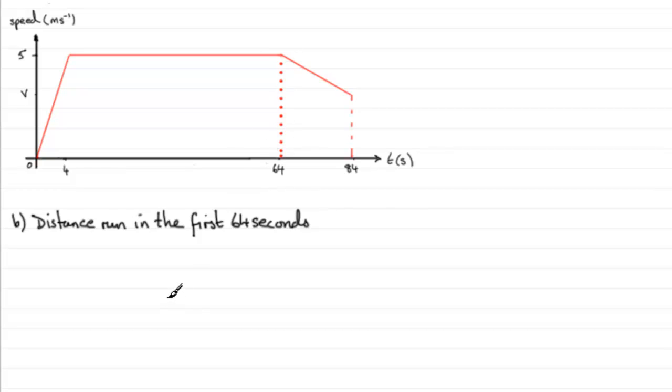So if we do that sum, the distance equals the area of the trapezium, which is the sum of the parallel sides. We can start with this length up here that goes from 4 to 64, so it's obviously 60 units, so 60 plus the length of this side down here.